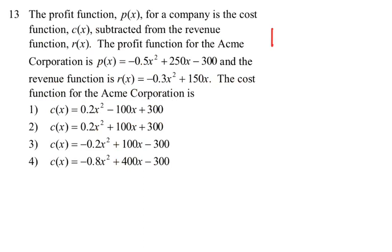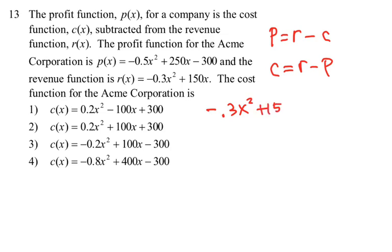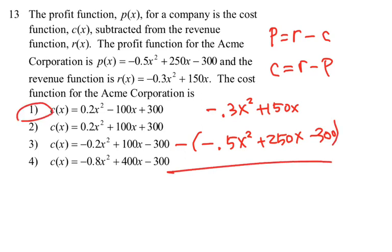Number thirteen: profit equals revenue minus cost, so cost equals revenue minus profit. Revenue is 0.3x squared plus 150x, and profit is negative 0.5 of that expression. When you subtract them, negative 0.3 minus negative 0.5 becomes positive 0.2. Carrying on the calculation, choice 1 becomes the answer.